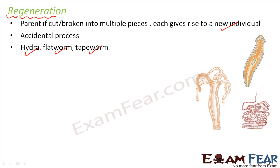Many people get confused between regeneration and fragmentation. Please remember that fragmentation is a process that happens on its own as soon as the organism matures. But regeneration is an accidental process — it will never happen on its own. Only if by chance the organism gets cut into pieces will those pieces, having specialized cells, have the capability to regenerate.